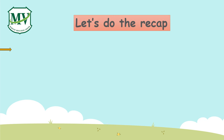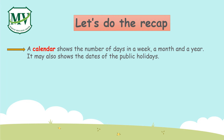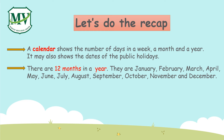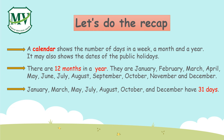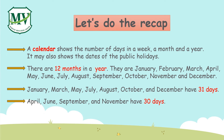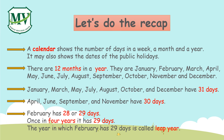Let's do the recap. A calendar shows the number of days in a week, a month, and a year. It may also show the dates of the public holidays. There are 12 months in a year: January, February, March, April, May, June, July, August, September, October, November, and December. January, March, May, July, August, October, and December have 31 days. April, June, September, and November have 30 days. February has 28 or 29 days. Once in four years, it has 29 days — the year in which February has 29 days is called leap year.